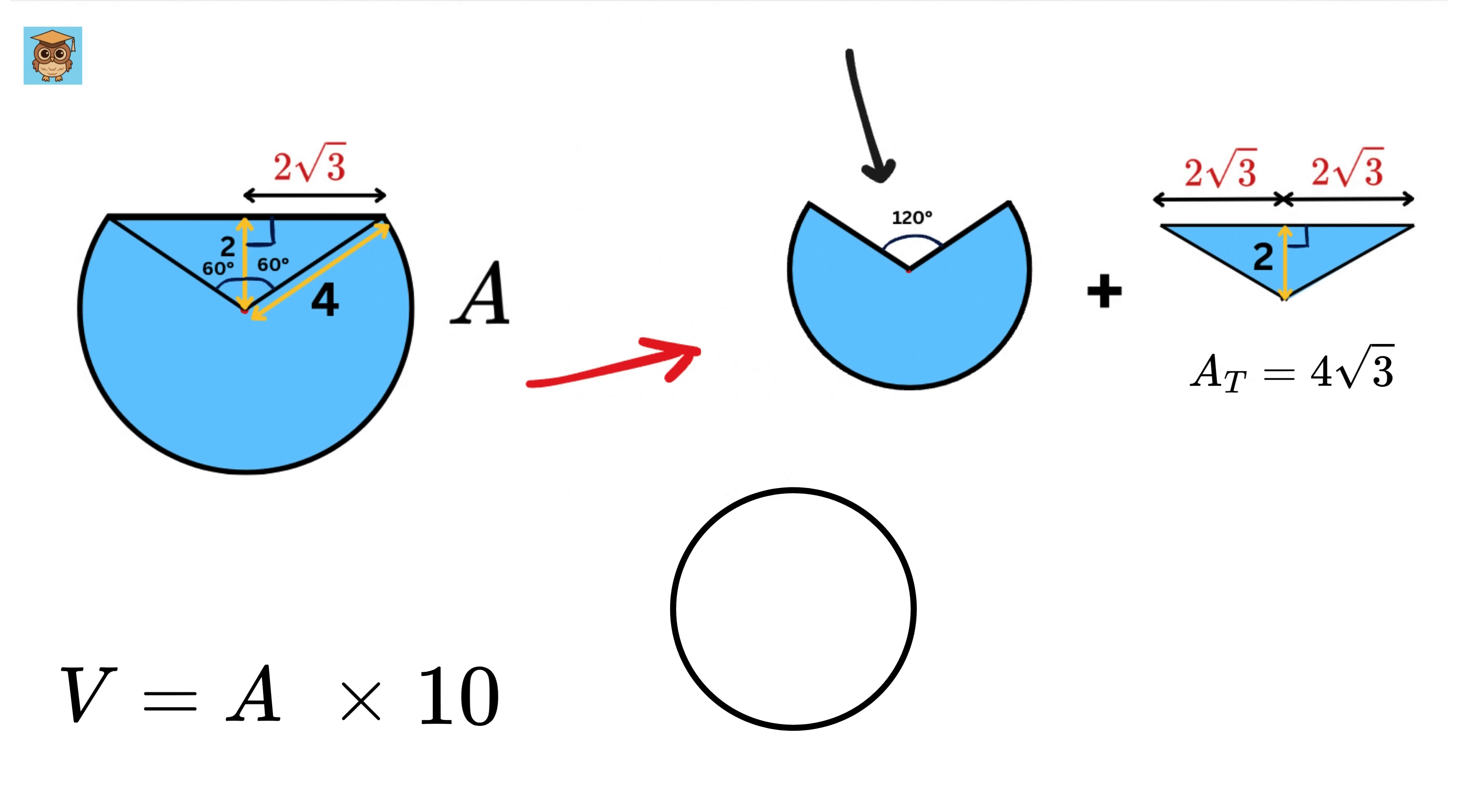Now consider a circle of radius R. Its area will be pi R square. Then if we take a segment of this circle such that this angle is alpha, what will be its area? It will be a fraction of this pi R square. Now how to find out this fraction? The fraction is based on the angle alpha compared to the full angle of the circle, which is 360 degrees. So the fraction is alpha divided by 360.